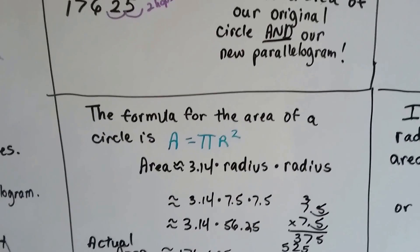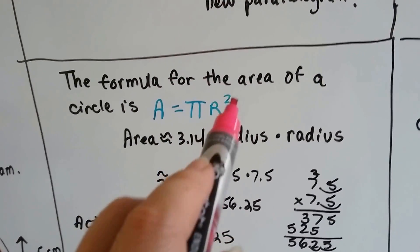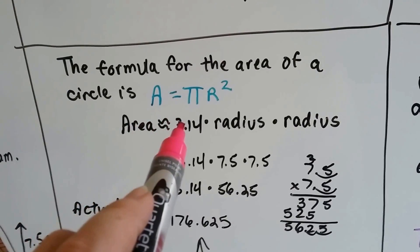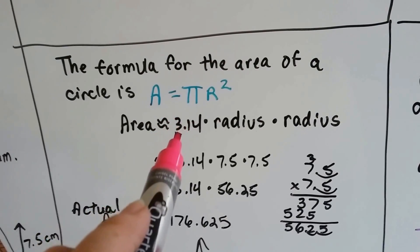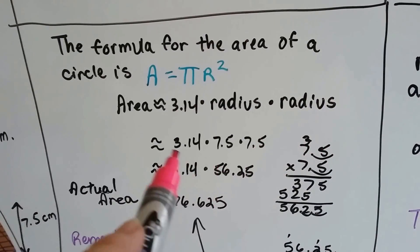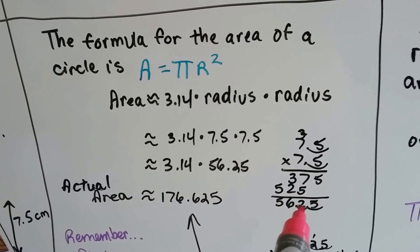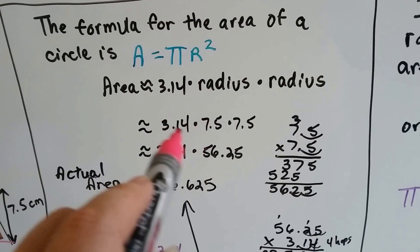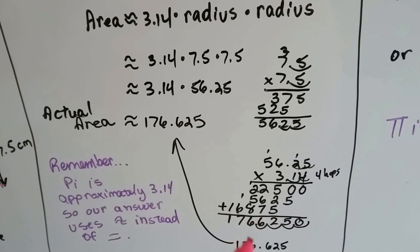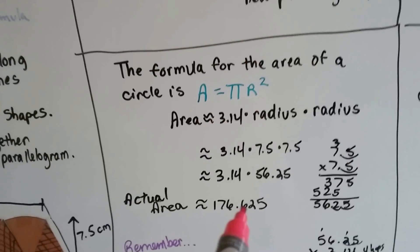The formula for the area of a circle is the area is equal to pi r squared. That is, it's approximately equal to pi, because pi is not perfect, so it's approximate, pi times the radius times the radius. Well, if I know my radius is 7.5, I multiply them to each other and I get 56.25. Now I multiply that to pi, the 3.14, and I got 176.625.